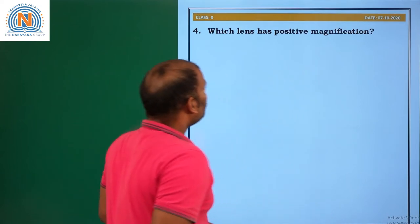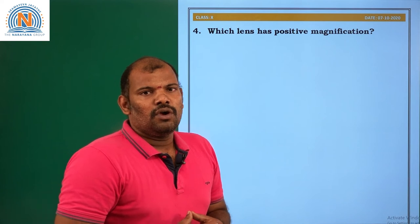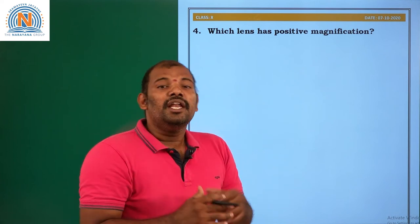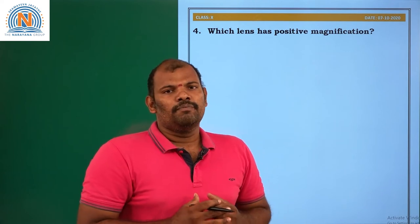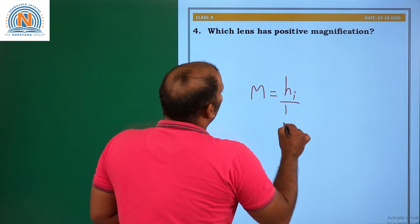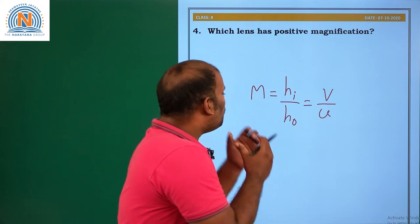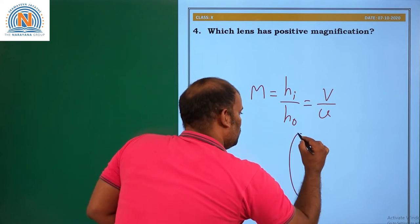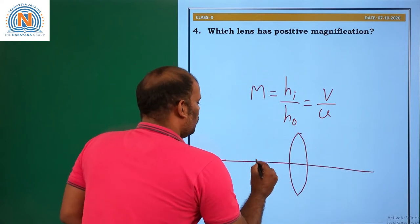Question number 4: Which lens has positive magnification? Coming to magnification — what is the formula for magnification in the case of a lens? In the case of a mirror, M equals minus V over U, which equals H-I over H-O. But for a lens, magnification M equals H-I over H-O, which equals V over U. As per the sign convention rule, this is a convex lens with an object placed in front of it.